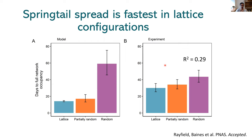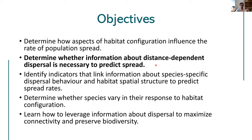That met our first objective — we know that habitat configuration has a strong impact on population spread. For our next objective, to determine whether we need information about the dispersal kernel to predict spread: we ran a version of the model that did not include dispersal kernel information and assumed all links were equal. That version did a much worse job at predicting spread rate in the experiment, confirming that the dispersal kernel is necessary.